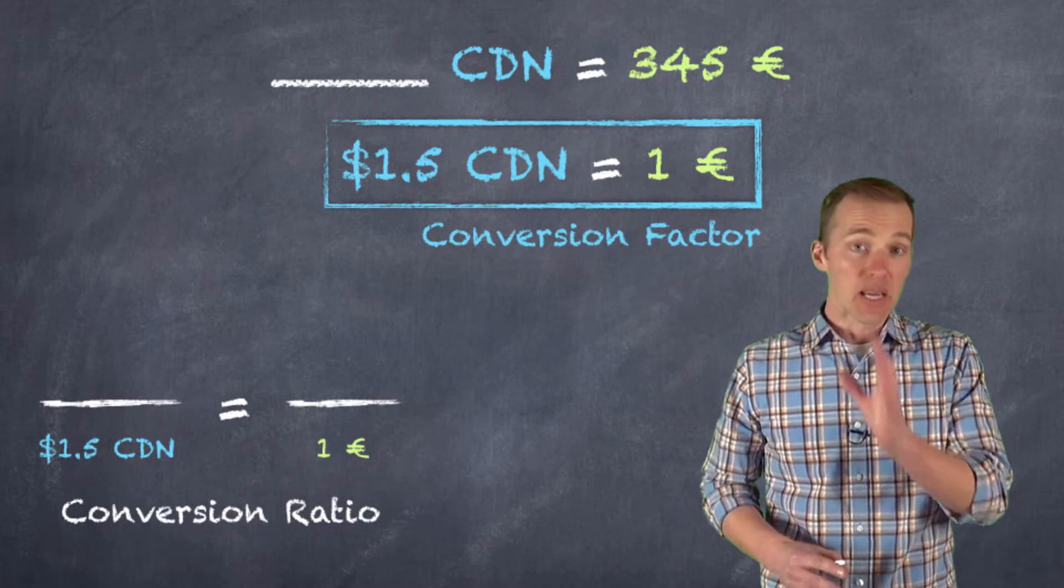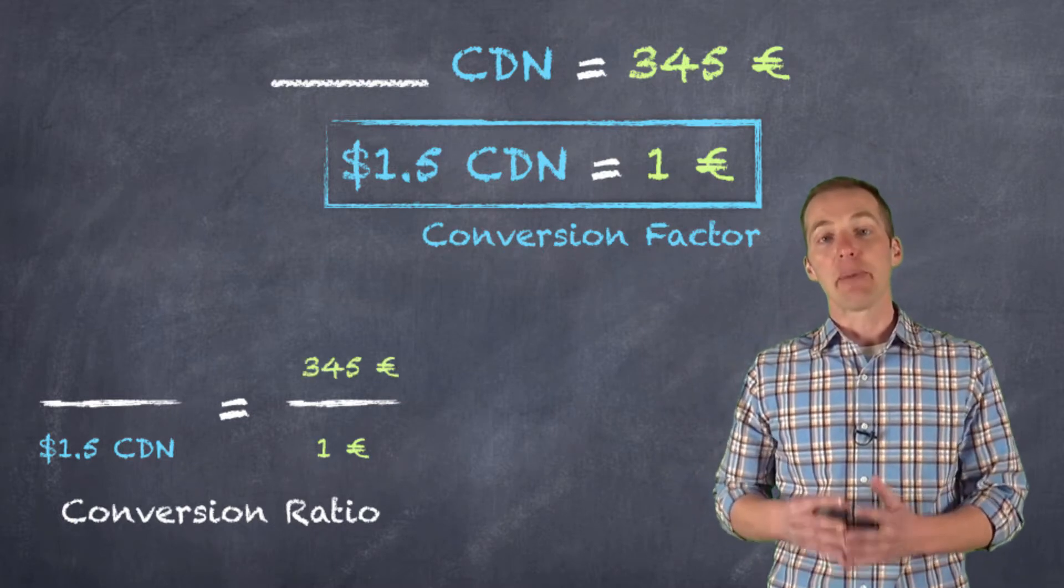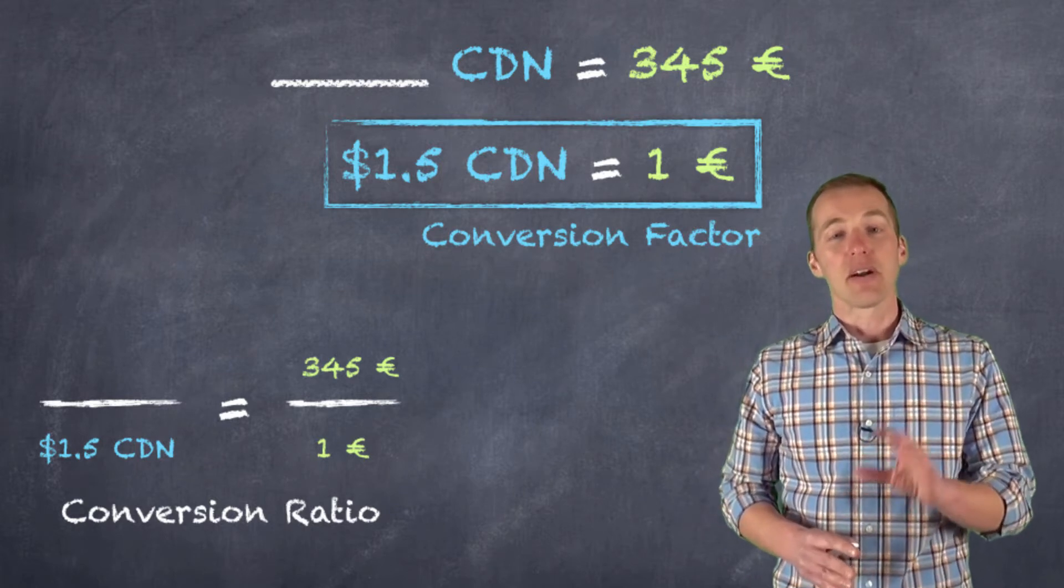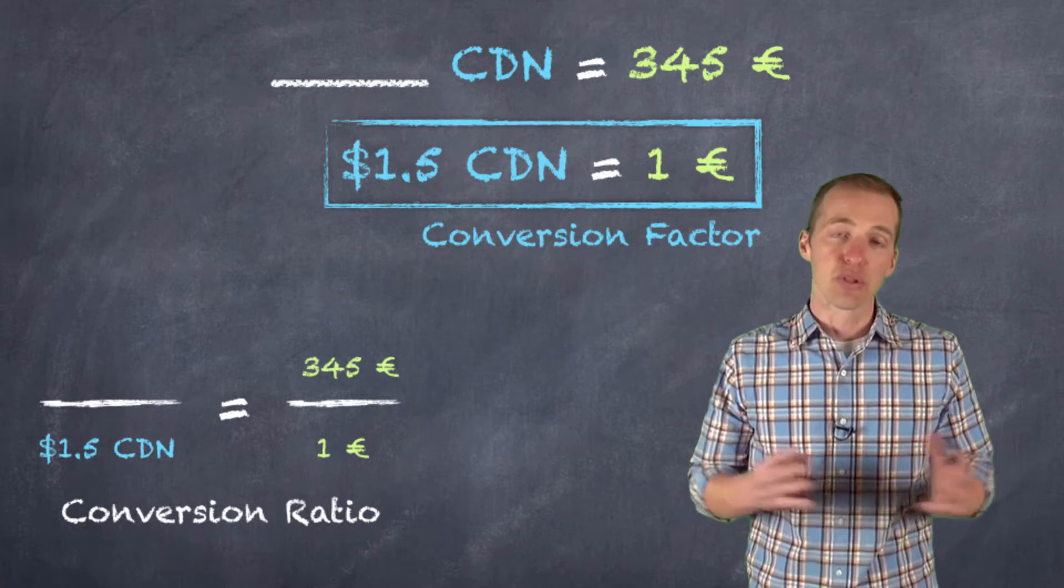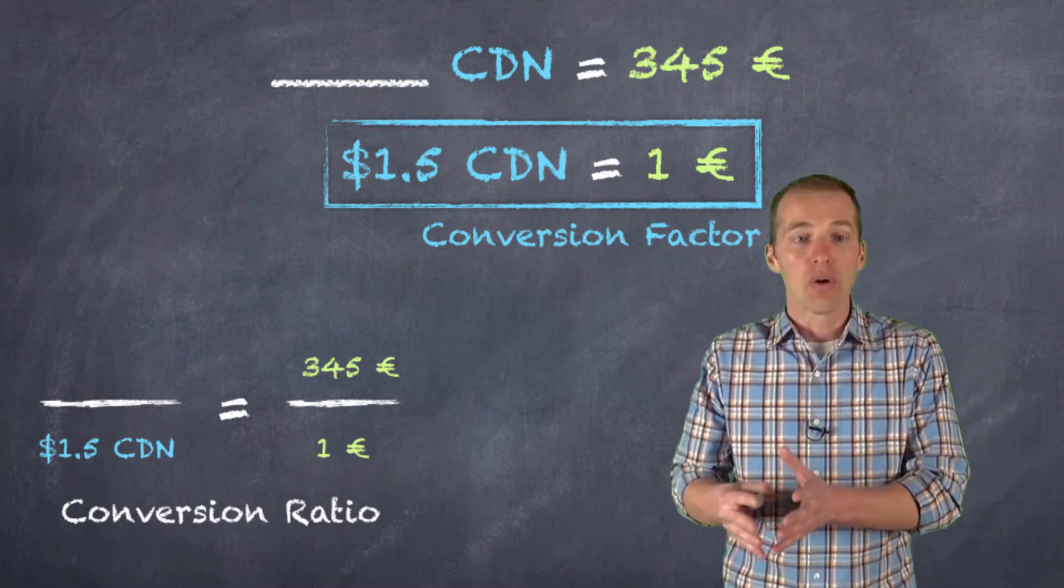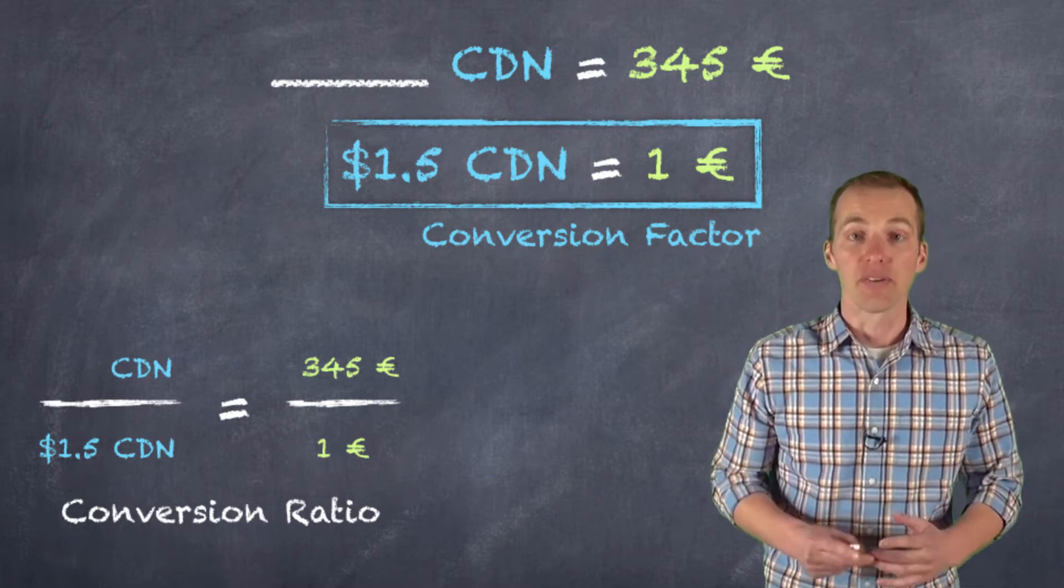Now above the euro, I'm going to keep all my euros on the same side, all in the same column. I'm going to put the amount of euros that I have, three hundred and forty-five. And then I'm going to figure out how much Canadian this would be equal to. So the way that you can set this up is that one and a half Canadian is equal to one euro. So three hundred and forty-five euro is equal to, well, we're going to figure that out.